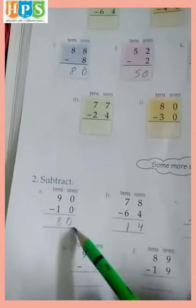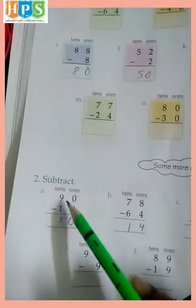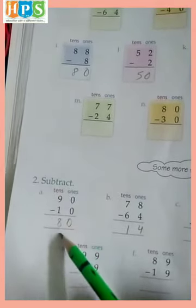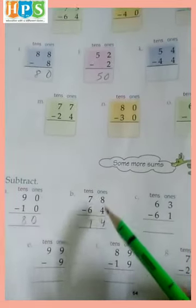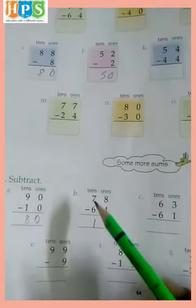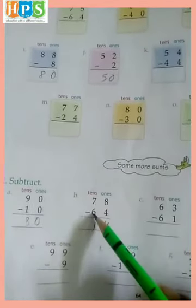0 minus 0 equals 0, and 9 minus 1 equals 8. 8 minus 4 equals 4, and 7 minus 6 equals 1.